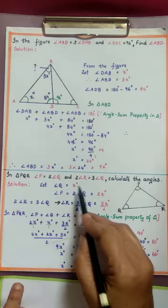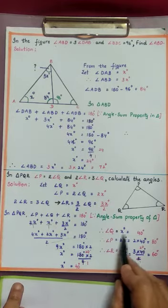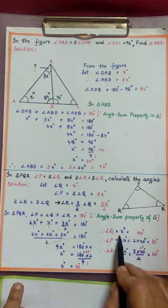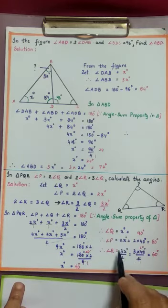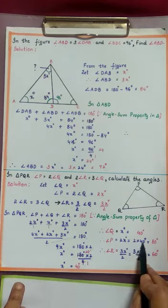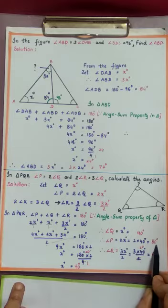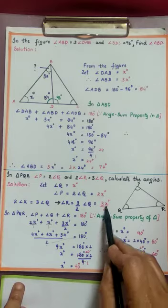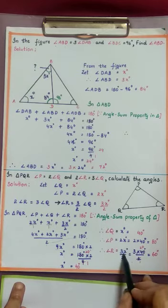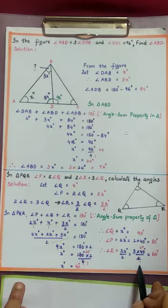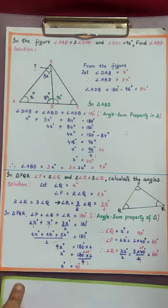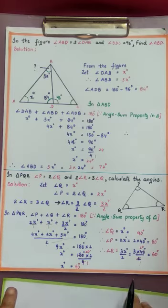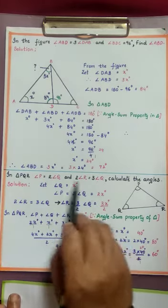Once we get X, we can find the other angles. Angle P is 2X degrees: 2 times 40 is 80 degrees. Angle R is 3X/2 degrees: 3 times 40 divided by 2. Cancellation gives 2 into 20 is 40, and 3 times 20 is 60 degrees. This is the way we can find the interior angles of triangle PQR when the relations are given like this.